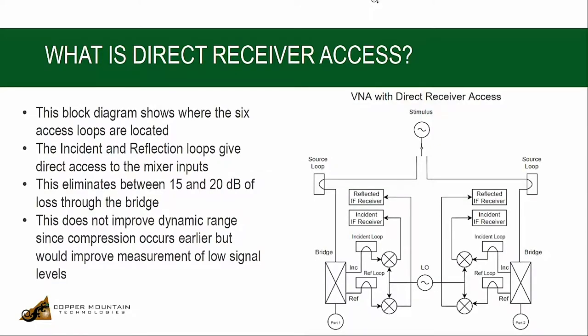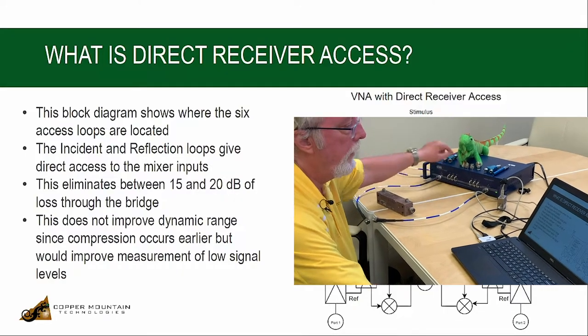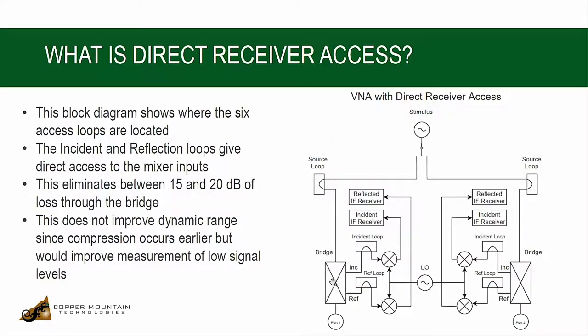Here's a block diagram of a VNA showing the stimulus at the top and it switches back and forth from port 1 to port 2. Imagine it's connected to port 1, then the stimulus passes through the source loop, and that's the middle loop on the left-hand side. It then passes through the measurement bridge, which is inside the VNA, and out port 1.